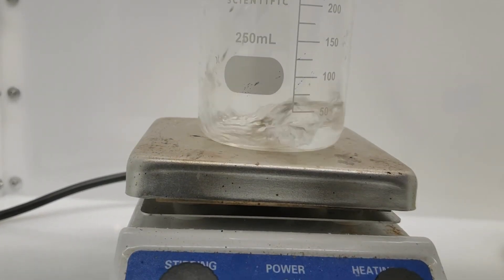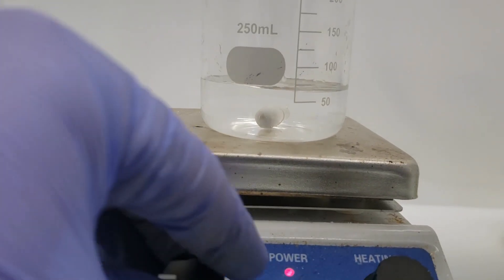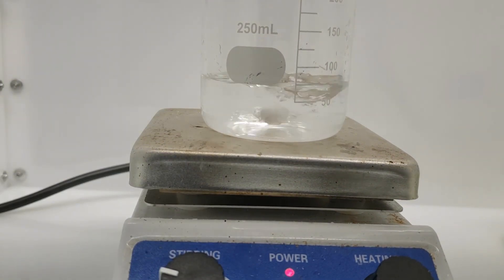A solution of 15 grams of oxalic acid dihydrate in 60 milliliters of water is then prepared, with stirring and heating so that it dissolves.